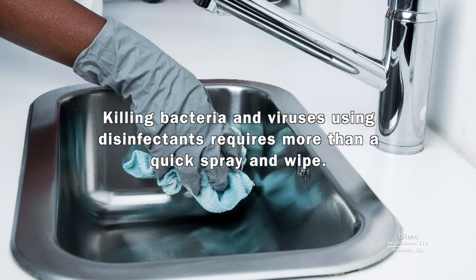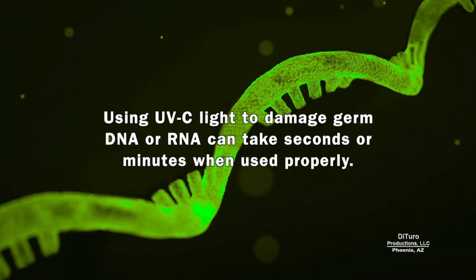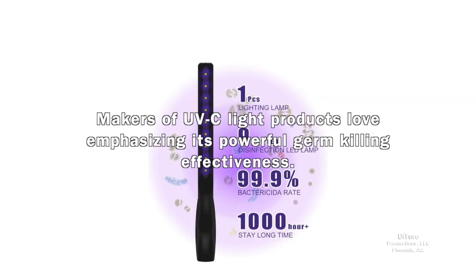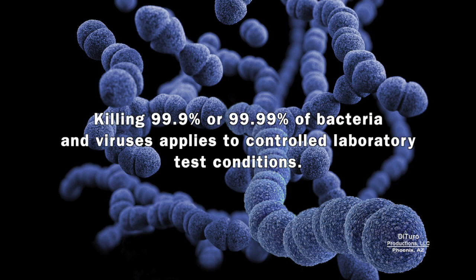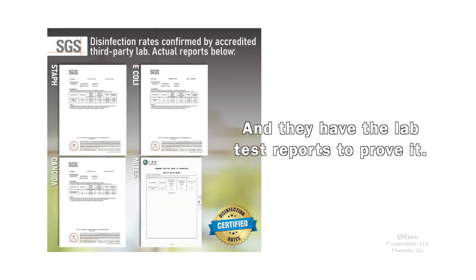Killing bacteria and viruses using disinfectants requires more than a quick spray and wipe. That's why it's recommended to wash your hands with soap for at least 20 seconds to kill most bacteria and viruses. Using UVC light to damage germ DNA or RNA can take seconds or minutes when used properly. Makers of UVC light products love emphasizing powerful germ-killing effectiveness, and claims of killing 99.9% or 99.99% of bacteria and viruses apply to controlled laboratory test conditions.